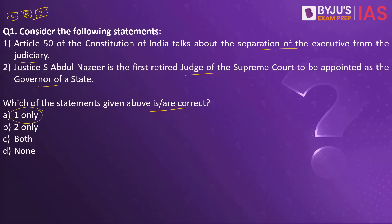But do we have a clear-cut separation of powers in India? No. Because we have the legislature, and from the legislature they become part of the executive — we have the parliamentary form of government. And as a result, Article 50 only speaks about separation of powers between the executive and judiciary, not a clear-cut separation as in the USA.